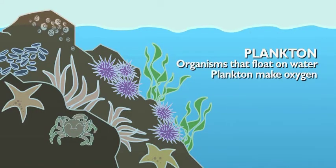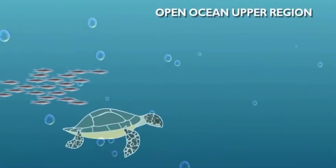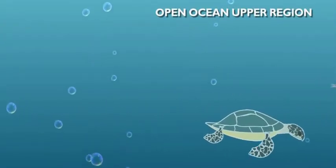What about the other zones? Below the intertidal zone is the open ocean upper region. This is where most of the fish you know live, along with turtles, whales, and sharks.